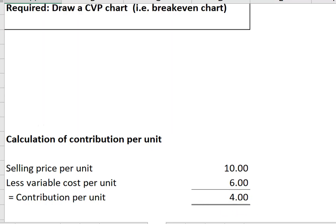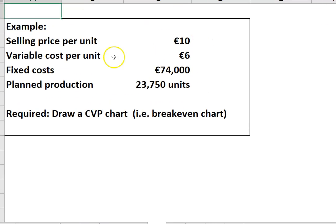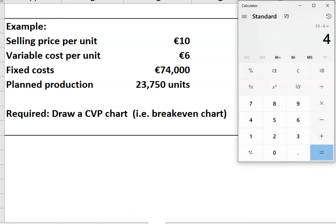The next thing to work out is the breakeven point. The breakeven point is your fixed costs divided by contribution per unit. So it's 74,000 divided by 4, which is 18,500 units. If this company makes 18,500 units, it will just cover all its costs, all its variable costs. It'll have enough left over to cover its fixed costs, but it'll make no profit.